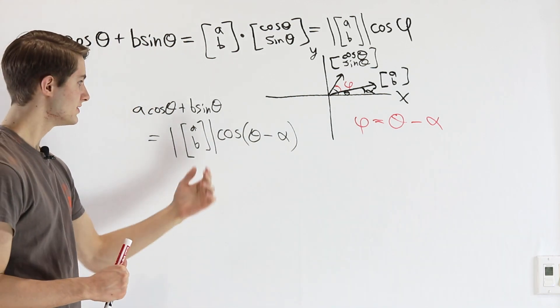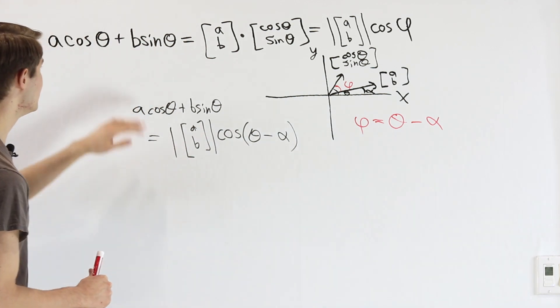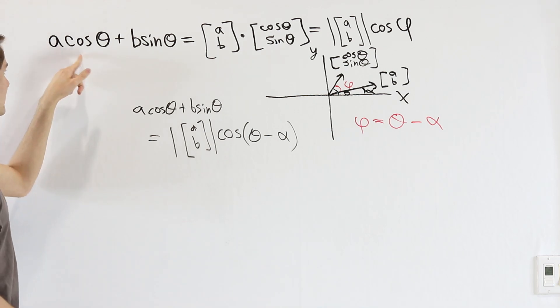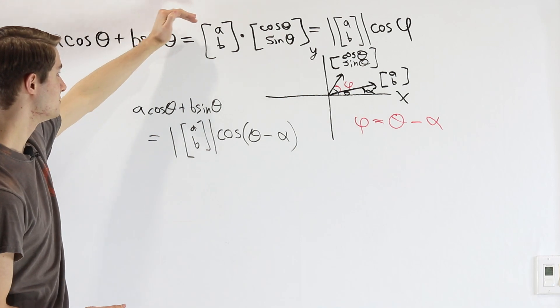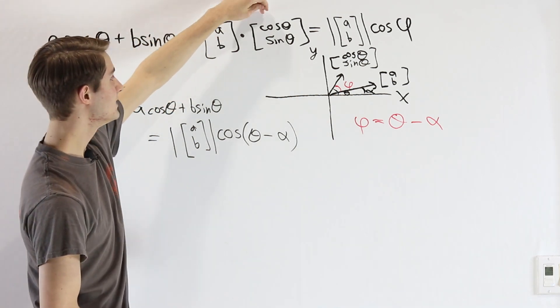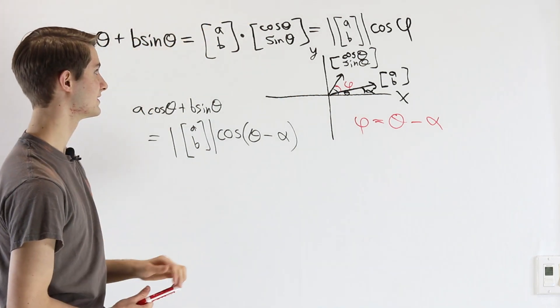So in order to get to this harmonic addition formula, we started with our expression A cos θ + B sin θ, and realized that looks a lot like a dot product between the vector [A, B] and a unit vector [cos θ, sin θ].